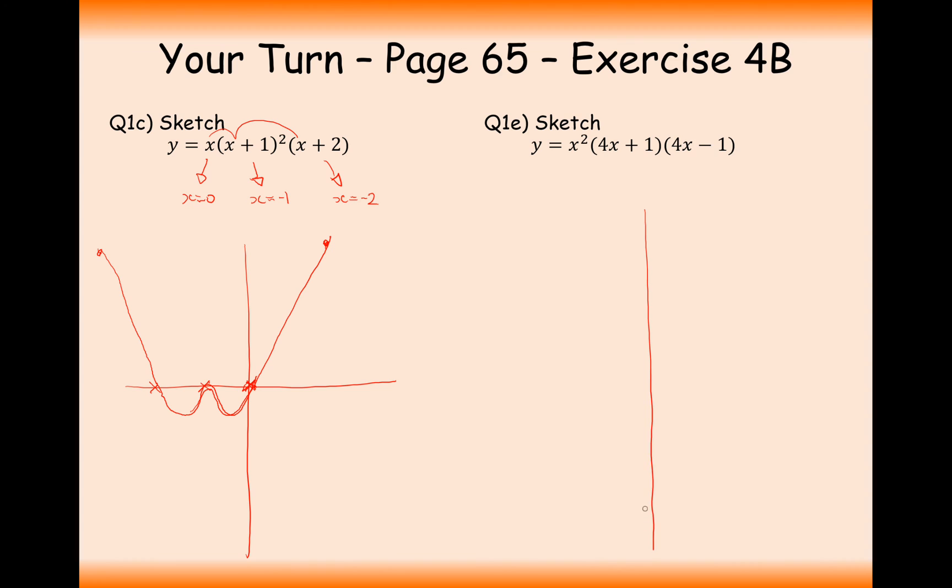What we're going to get for this second graph here is a repeated route at 0, a route at minus 1 quarter, and a route at 1 quarter. What's the shape of the graph going to be? Well, it's going to be a 16x to the 4 graph, so very steep in this case here. Where's it going to cross through the y-axis? Well, when x is 0, so in this case it's 0.